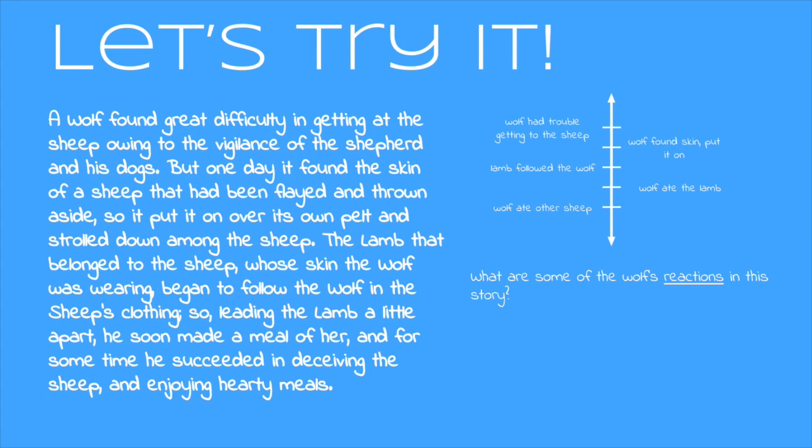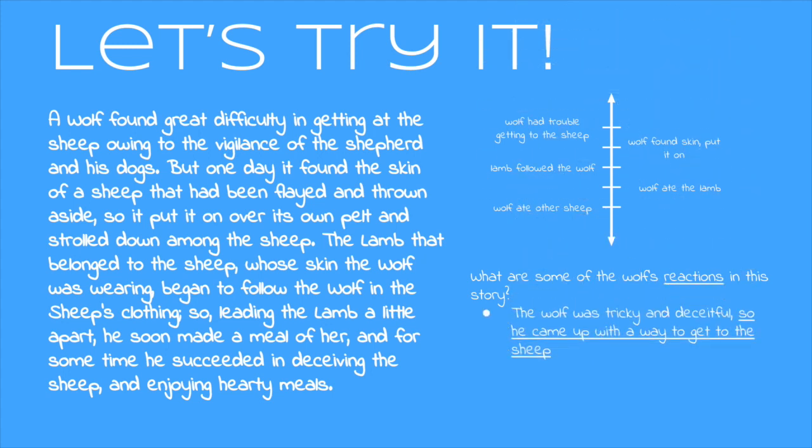Let's take a look at the very beginning. A wolf found great difficulty in getting at the sheep. So the wolf couldn't get to the sheep, but because he's tricky and deceitful, he came up with another way to do it. One way we could think about this is: the wolf was tricky and deceitful, so he came up with a way to get to the sheep.